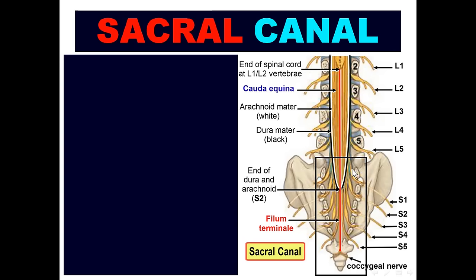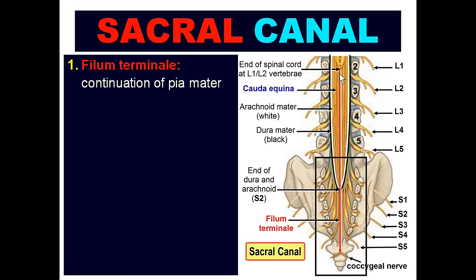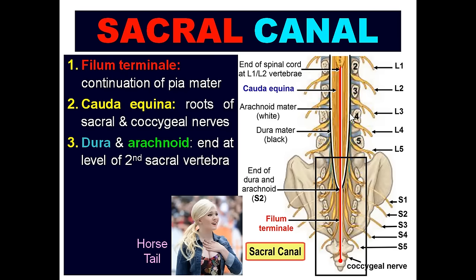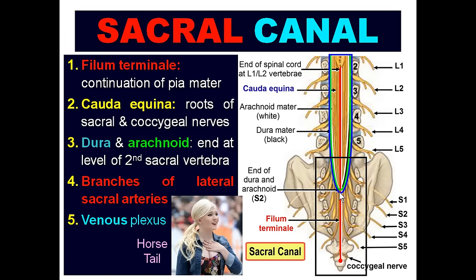The sacral canal does not permit passage of the spinal cord because the spinal cord ends at the lower level of L1. The contents of the sacral canal are: the filum terminale (continuation of the pia mater), sacral and coccygeal nerve roots called the cauda equina, dura and arachnoid mater ending opposite S2, branches of lateral sacral arteries, venous plexus, and fat.